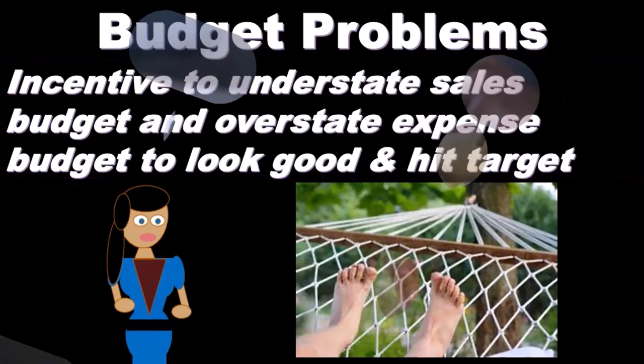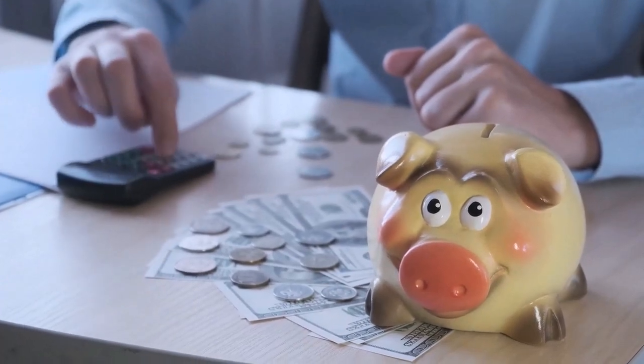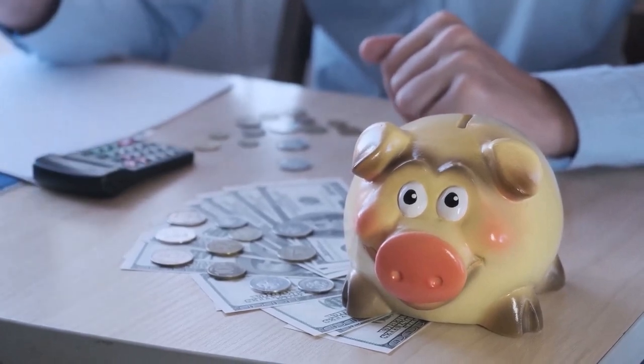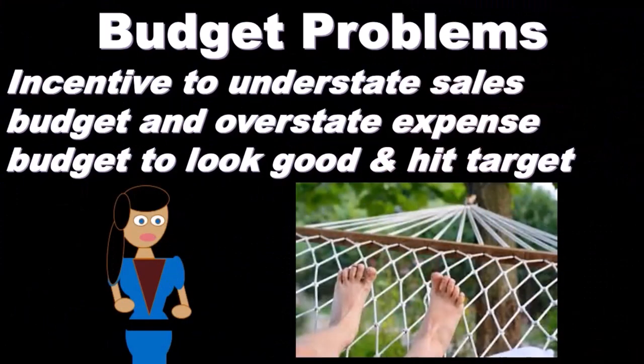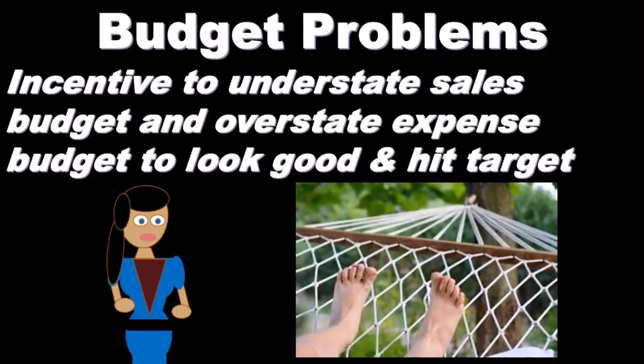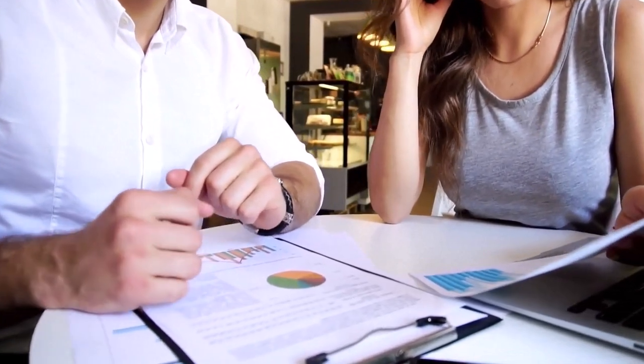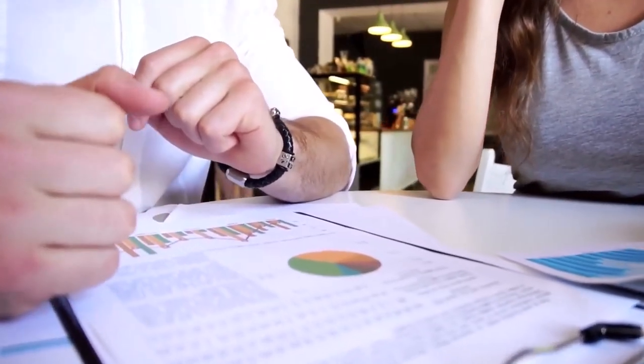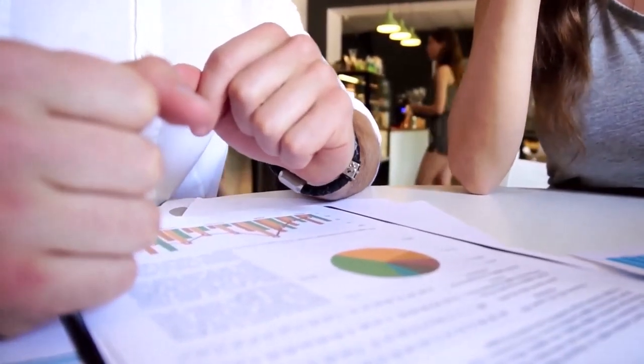If you imagine the budgeting process, upper management is there to approve the budgeting process and communicate how to make the budget. Then department managers and supervisors come up with budgets for their particular department or segment of the company. Those department managers have an incentive to understate sales and overstate expenses, because if they do so it'll be easier to hit that target and they'll look good.